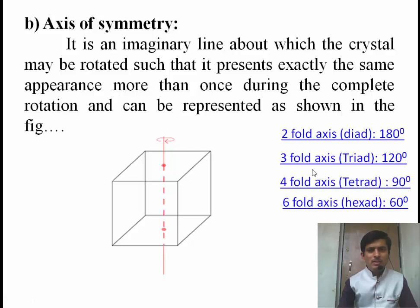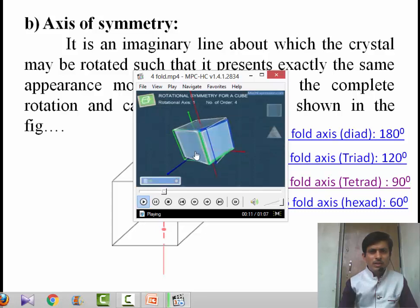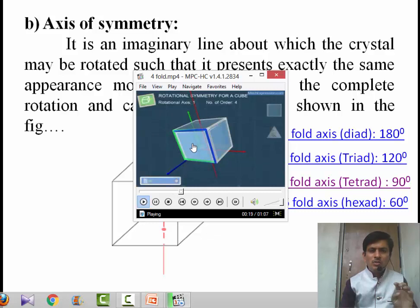There are several types: 4-fold axis, 3-fold axis, and 2-fold axis of symmetry. Why is it called a 4-fold axis? About this imaginary line, the crystal is rotated — 1, 2, 3, and 4 — so during complete rotation it shows the same appearance 4 times. Hence it has a 4-fold axis of symmetry.